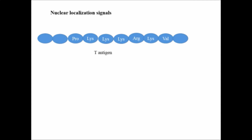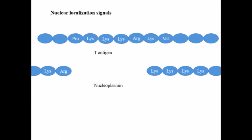In the T antigen, the NLS sequence was found to be: proline, lysine, then a repetition of three lysines, then arginine, lysine, and valine. If this sequence is present, the protein will be transported to the nucleus. However, sometimes the NLS is not in a continuous fashion — it gets interrupted by other amino acids. For example, in nucleoplasmin there is a lysine-lysine sequence followed by 10 amino acids and then the NLS sequence again. Such a type of NLS is known as bipartite.